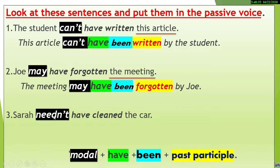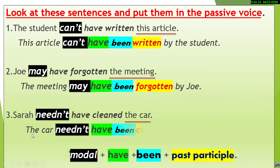The last example: 'Sarah needn't have cleaned the car.' The modal 'needn't' expresses the absence of obligation in the past. We have the perfect infinitive 'have cleaned.' The object is 'the car,' so we move it to the subject position. The result is: 'The car needn't have been cleaned by Sarah.'